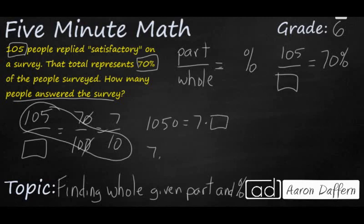So let's go ahead and divide 1050 by 7. And that is going to get us 150. So it looks like we are going to have 150 people responding to the survey.